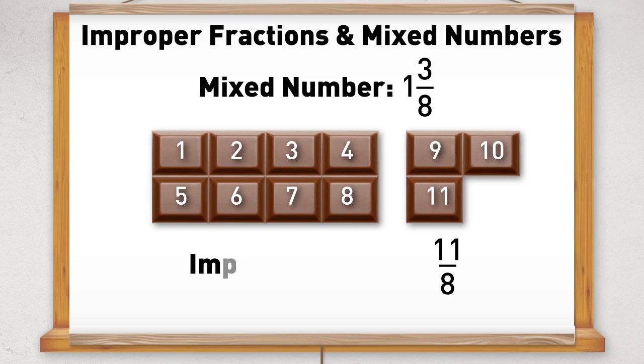This is called an improper fraction because the top number is bigger than the bottom number. Many people call these top heavy fractions.